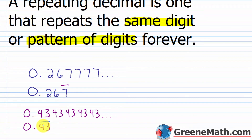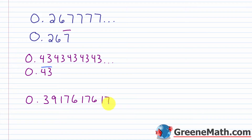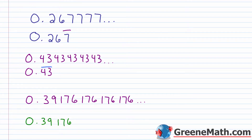As another example, let's say I saw something like 0.39176 where the 176 repeats forever — so 176, 176, 176 and so on. I can put three dots, or write this as 0.39176 and put a bar on top of the 1, the 7, and the 6 — the three digits that are going to repeat forever.